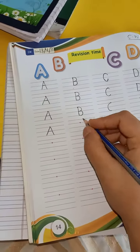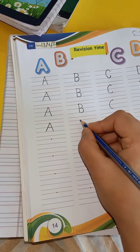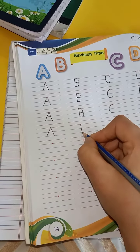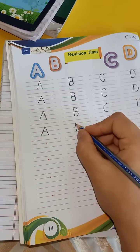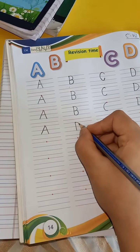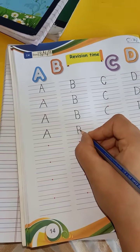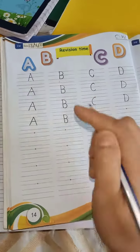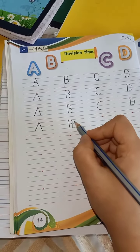Okay, now what comes after A? Yes, B. B-B-B-B says B. So make a standing line, then make a curve, then make second curve. Okay, it's a letter B. B says B.